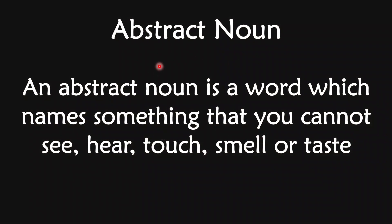This is the fifth type of noun — abstract noun. An abstract noun is a word that names something you cannot see, hear, touch, smell, or taste. This is a very simple definition. Those things you cannot see, hear, touch, smell, or taste come in the group of abstract nouns.